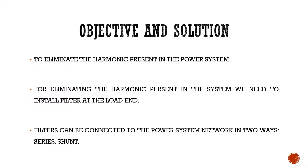The main objective of today's class is to eliminate the harmonic that is present in the power system. We are going to discuss about the methods of elimination of harmonics. The main effect of harmonic present in the power system is the damage to the equipment load that is connected to the power system. The most simple way of eliminating harmonic is by installing a filter in the power system.